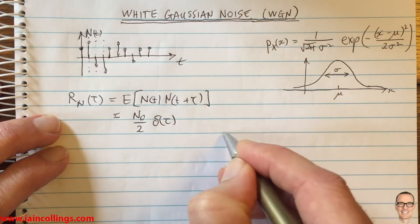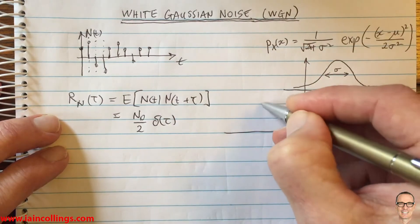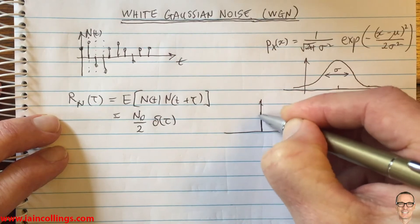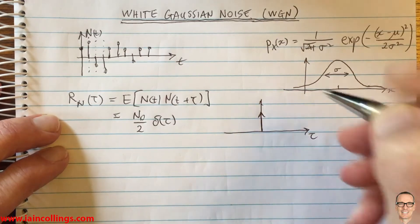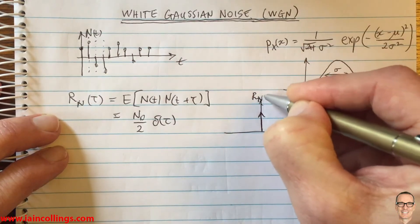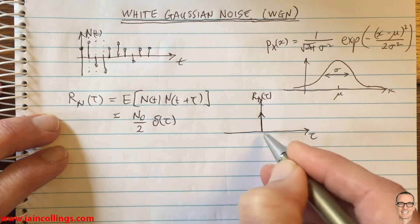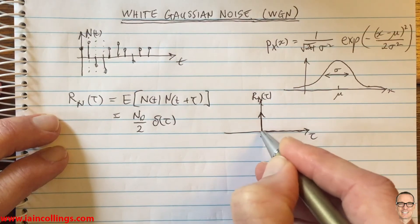So here's the shape of the delta function, the autocorrelation function. It's a delta function. That means for all those delays tau, they equal zero, except for at the zeroth delay.